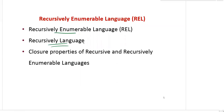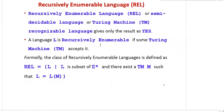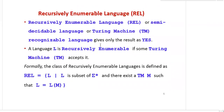Recursively enumerable language is also called a semi-decidable language, also called a Turing machine recognizable language. A recursively enumerable language gives only the result 'yes' — that means acceptance. For the non-acceptance case it won't give a result, which is why it is called semi-decidable. A language is recursively enumerable if some Turing machine accepts it.